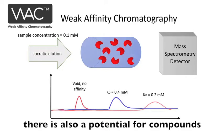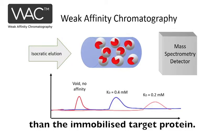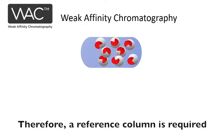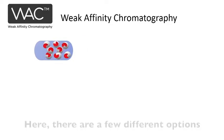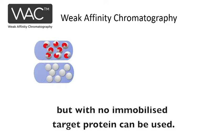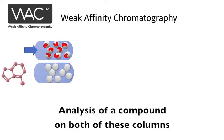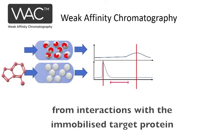However, there is also potential for compounds to interact with other parts of the column than the immobilized target protein. Therefore, a reference column is required to assess specific binding. Here there are a few different options. A blank column packed with the same silica particles but with no immobilized target protein can be used. Analysis of a compound on both of these columns will give the specific retention time from interactions with the immobilized target protein.